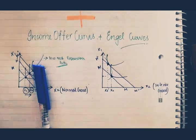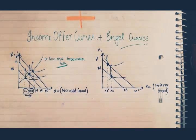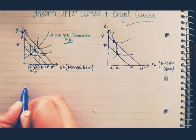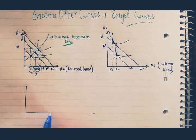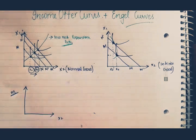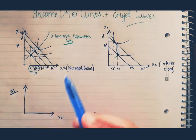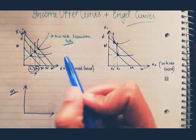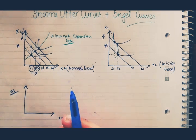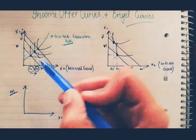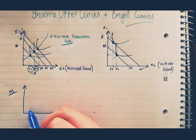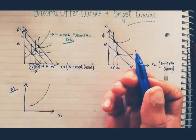Now, as we proceed to Engel curves, Engel curves is basically when you observe and focus on only one good and the income. For example, for a normal good, we're going to be focusing on X2. For Engel curves, you'll be observing X2 and the income — seeing how the demand of the good changes when we change the income. Here we're just looking at the relationship between income and X2, not two goods against each other. As the income increases, the demand for the good would also increase. So your Engel curve for normal goods would just be like that — an upward sloping curve.